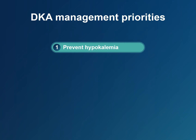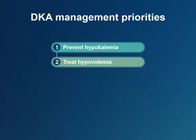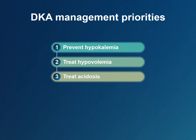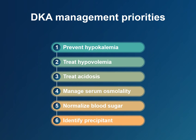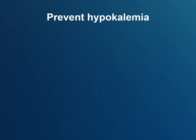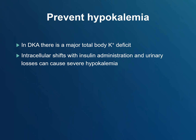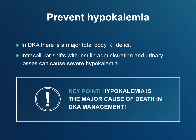Preventing and treating hypokalemia or low potassium must be addressed first. The other targets are to treat hypovolemia, treat acidosis, manage hyperosmolality, normalize blood sugar, and finally to identify the precipitant of DKA. Low serum potassium concentration or hypokalemia is one of the most important considerations when treating DKA. In DKA there is a significant deficit in total body potassium. Intracellular shifts with insulin administration and urinary losses can cause severe hypokalemia, which in turn may result in life-threatening cardiac arrhythmia and death.